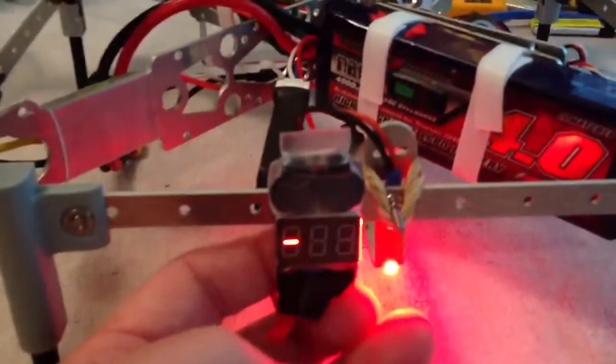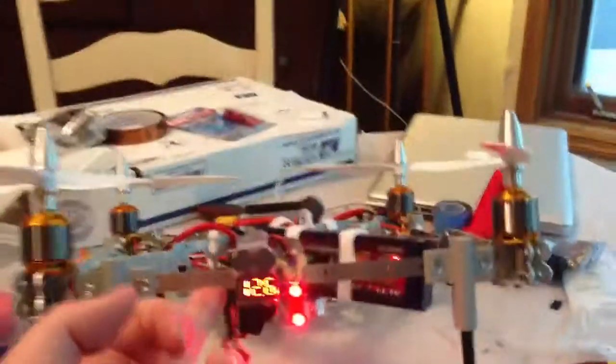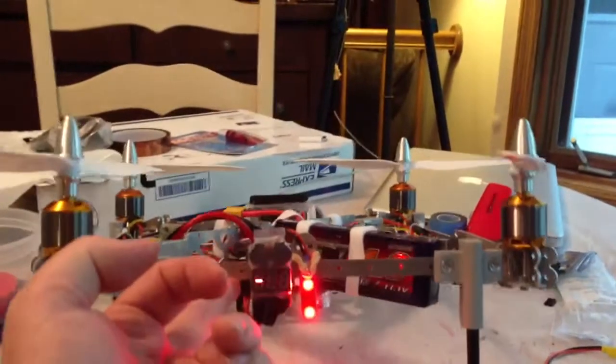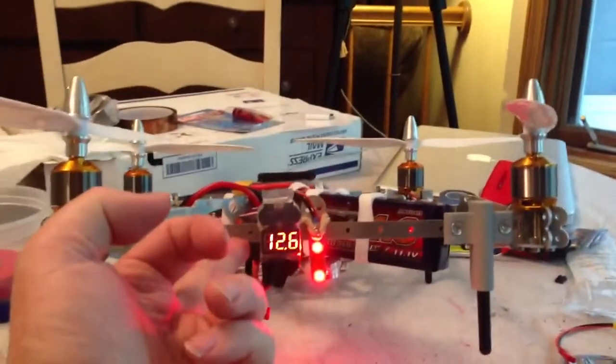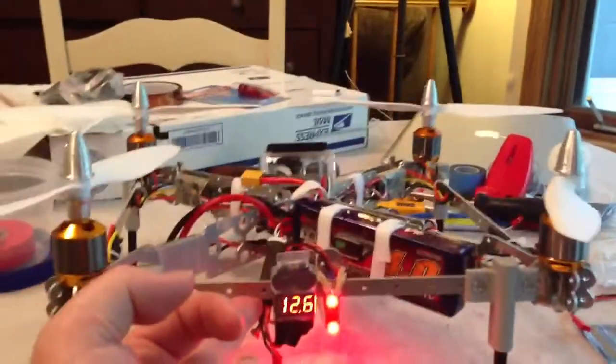Anyway, I double-stick taped this to the back, so when it's flying, you can bring it close enough to you that the numbers are big enough that you can get a good read on the battery voltage. If it falls down to about...